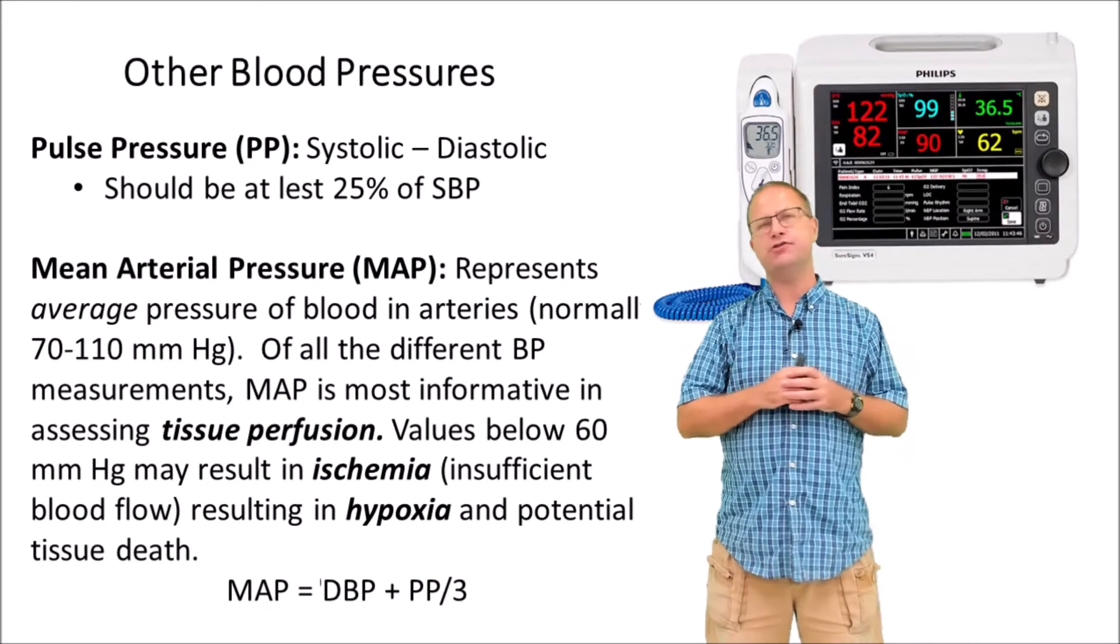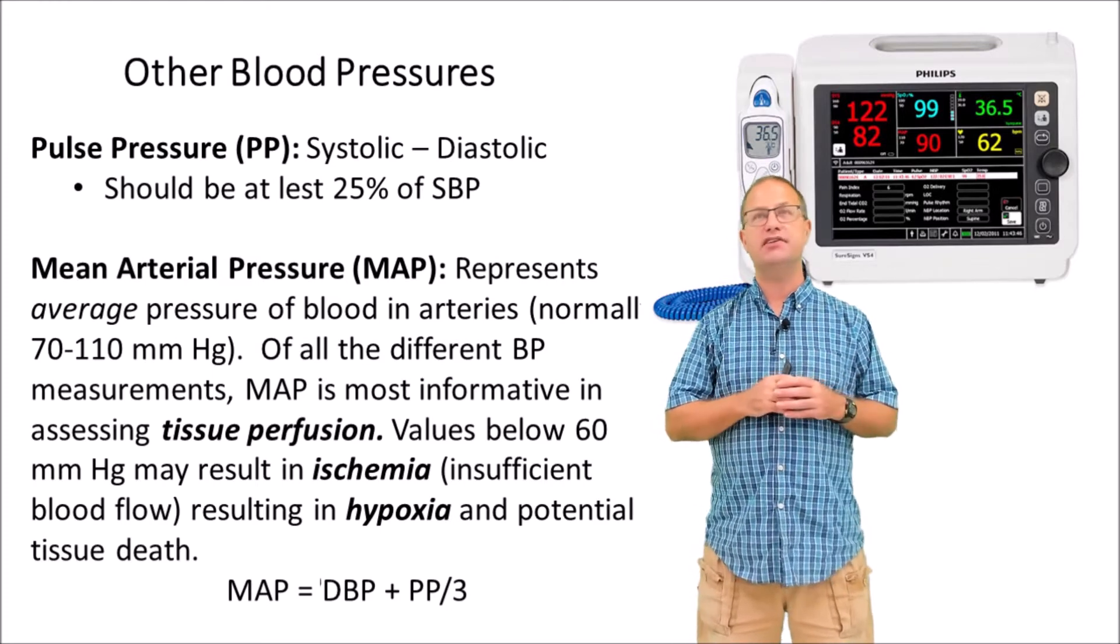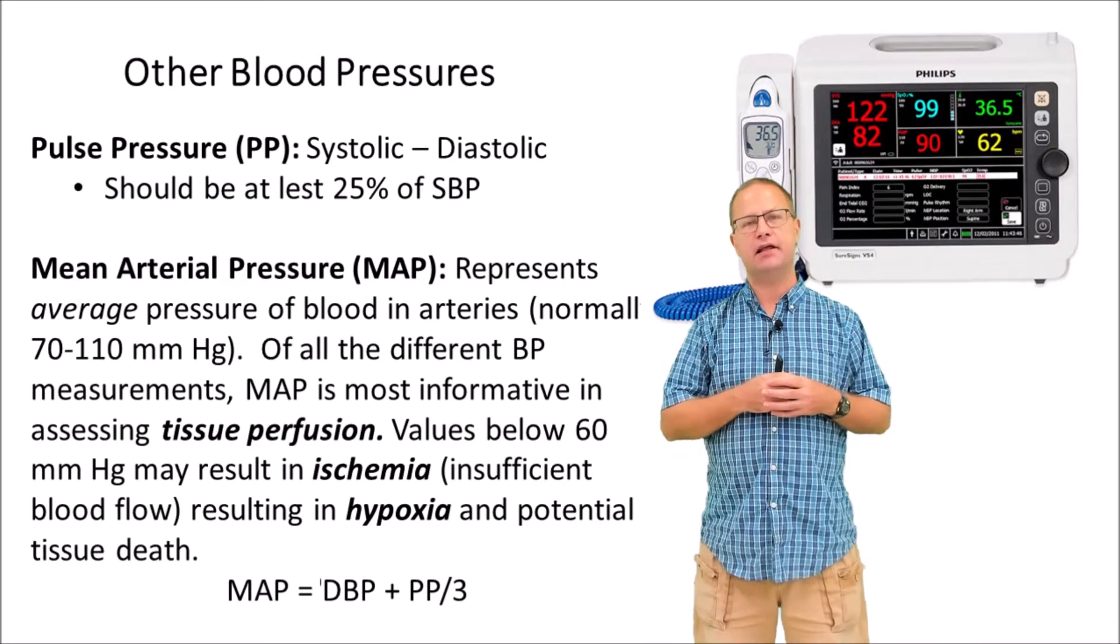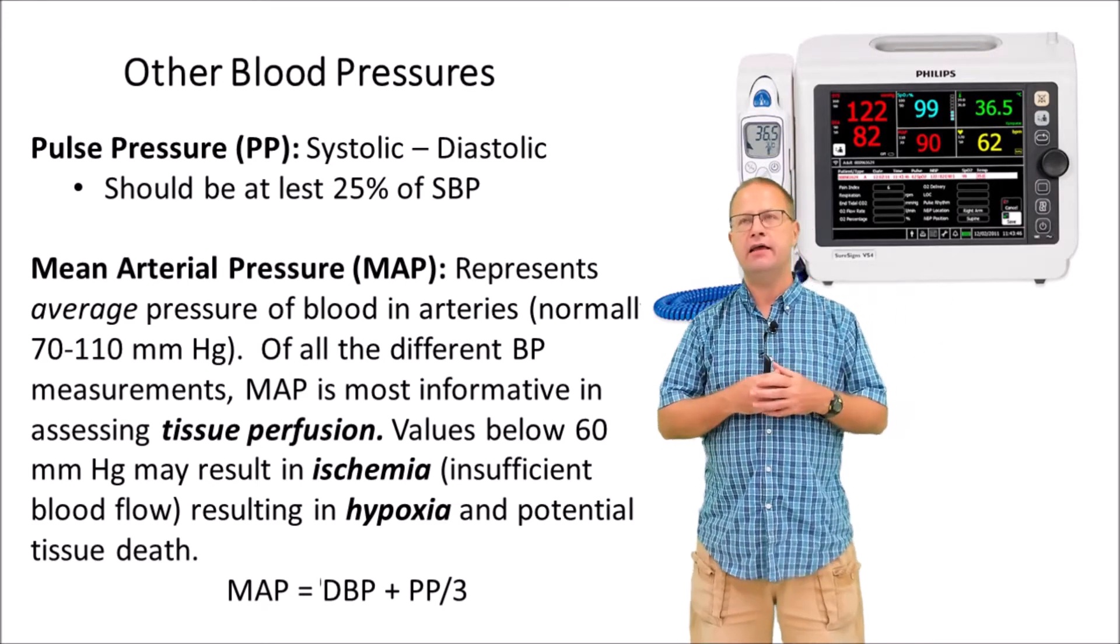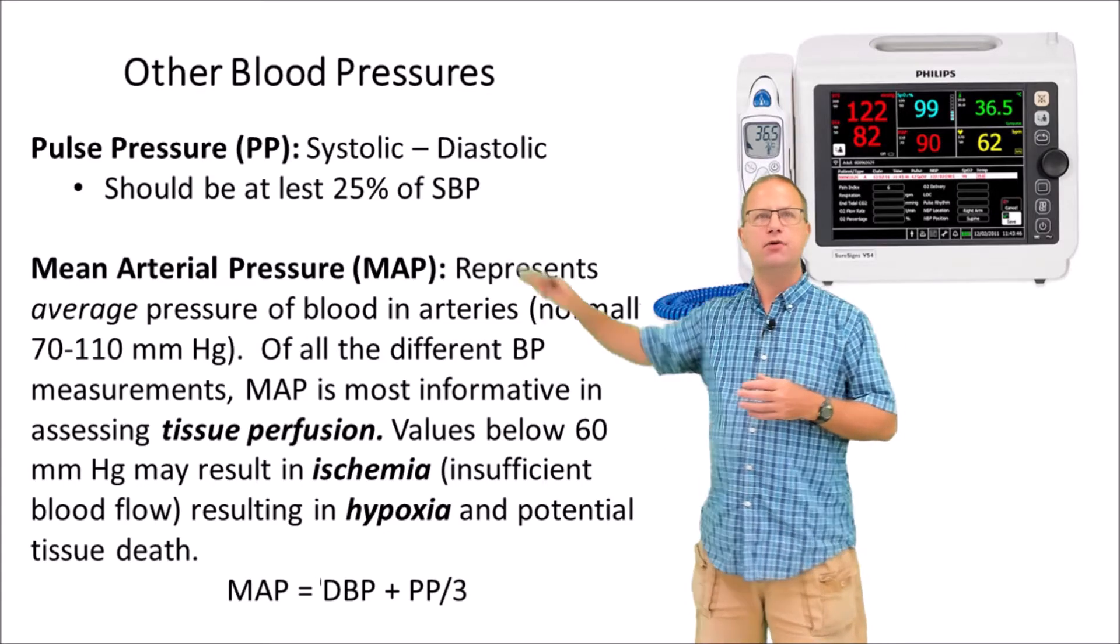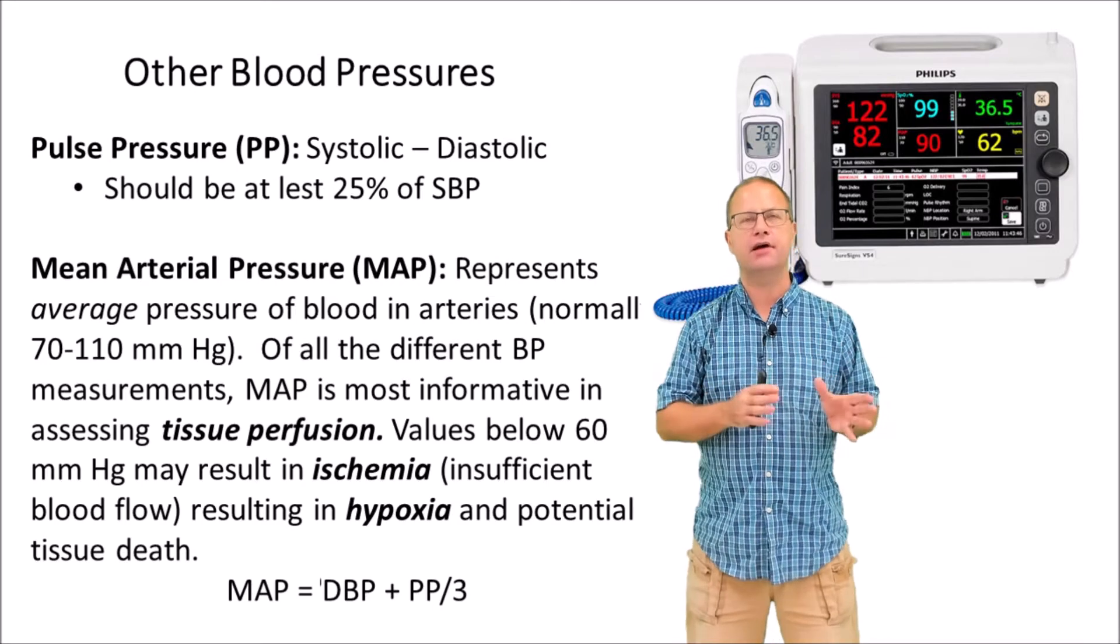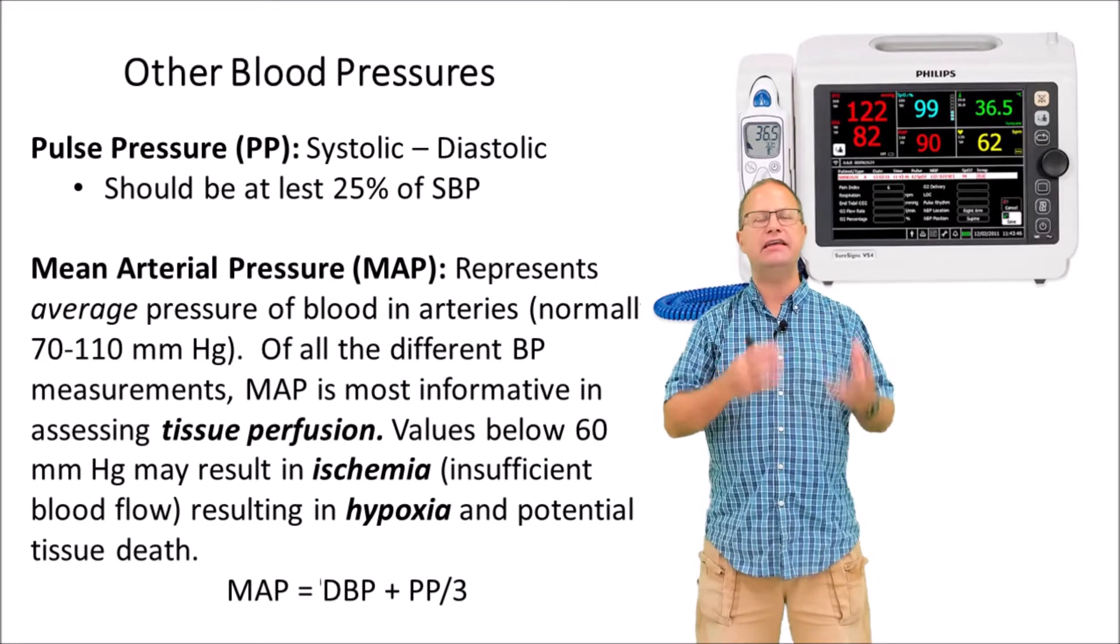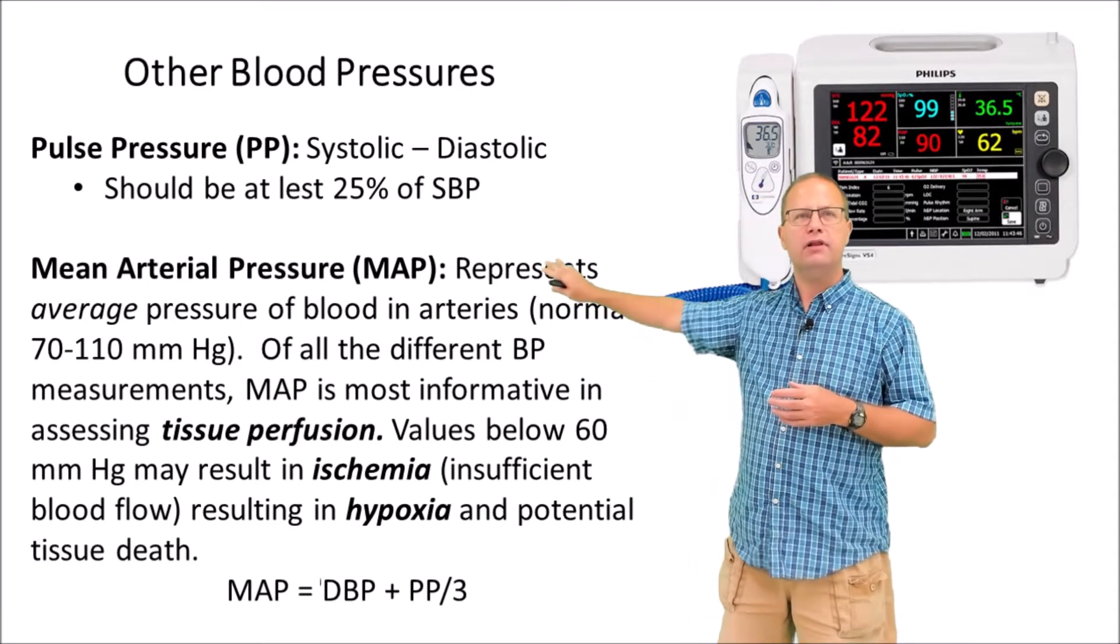Other pressures we should talk about are the pulse pressure and mean arterial pressure. The pulse pressure is simply the systolic pressure minus the diastolic pressure. So if I had a systolic and diastolic of 120 over 80, my pulse pressure would simply be 40 mmHg. Ideally the pulse pressure should be at least 25% of the systolic pressure. If it's lower than that, it could indicate stenosis or reduced ejection from the ventricles.